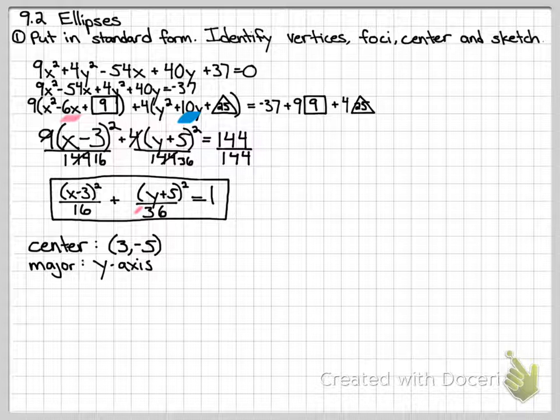Once I know my major axis, I can also work on finding the foci. Remember we have a formula, c squared equals a squared minus b squared. So my a squared is the major, the big number, 36, minus my b squared is the little one, the minor one, 16.